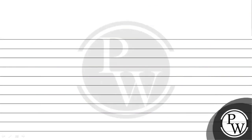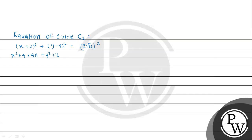The equation of the new circle C2 is (x + 2)² + (y - 4)² = (2√26)². Expanding using (a+b)² and (a-b)² formulas, we get x² + 4 + 4x + y² + 16 - 8y = 4 × 26 = 104.